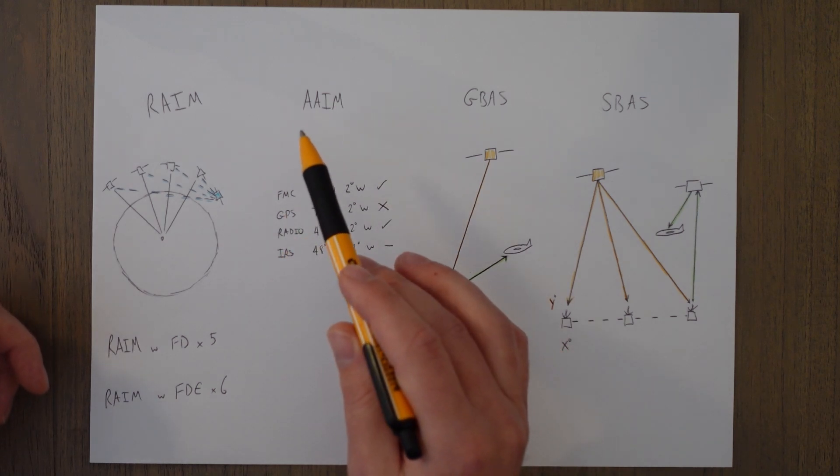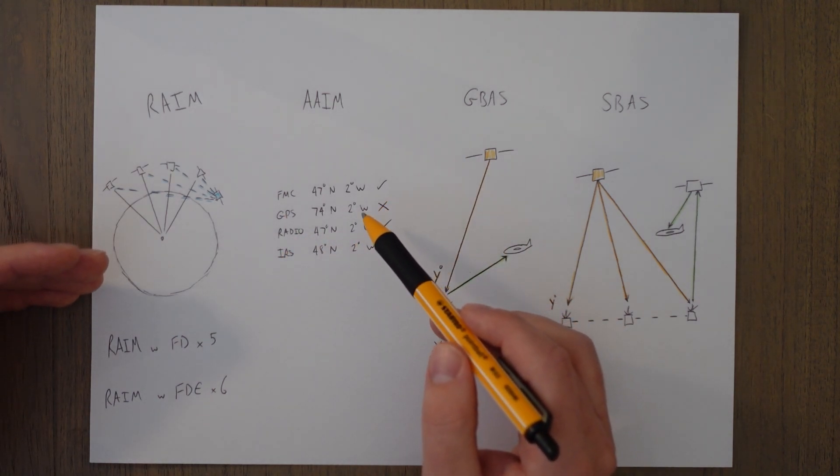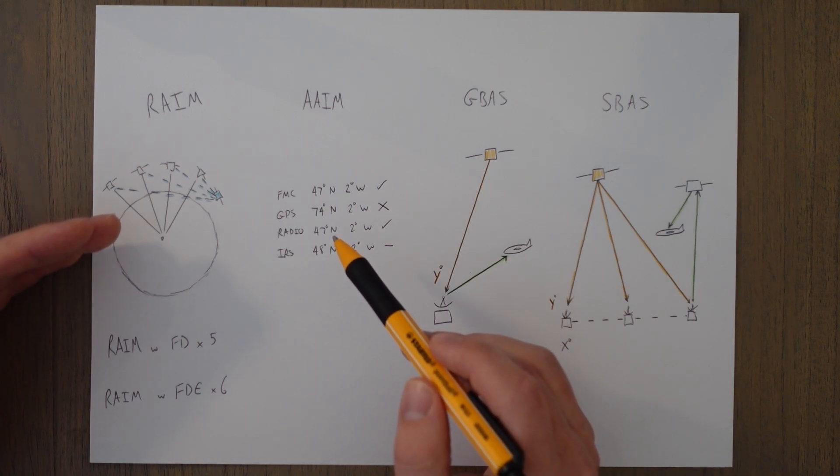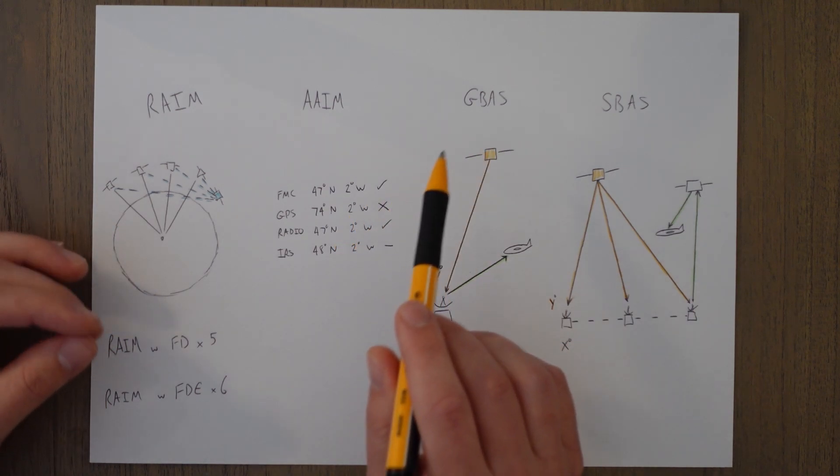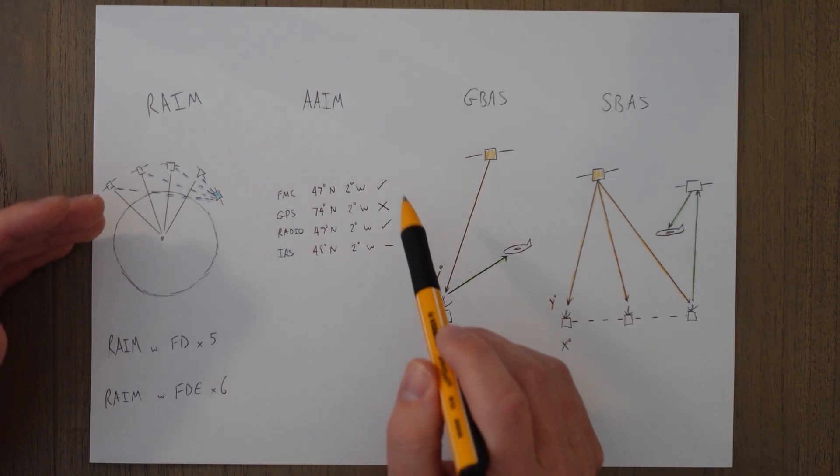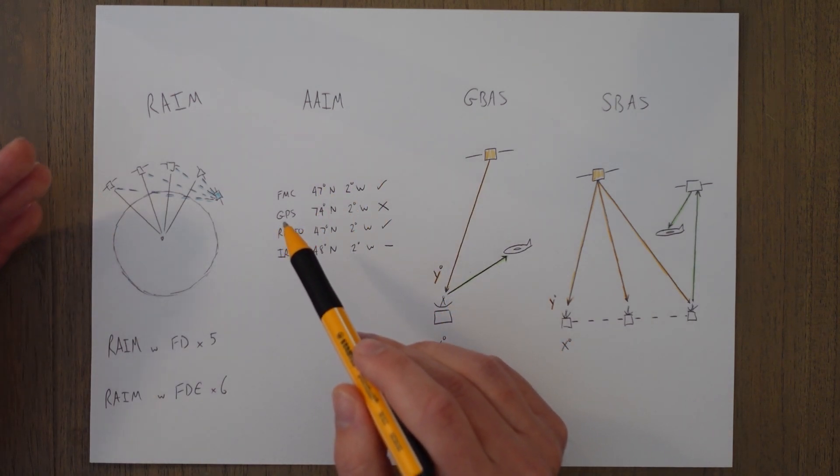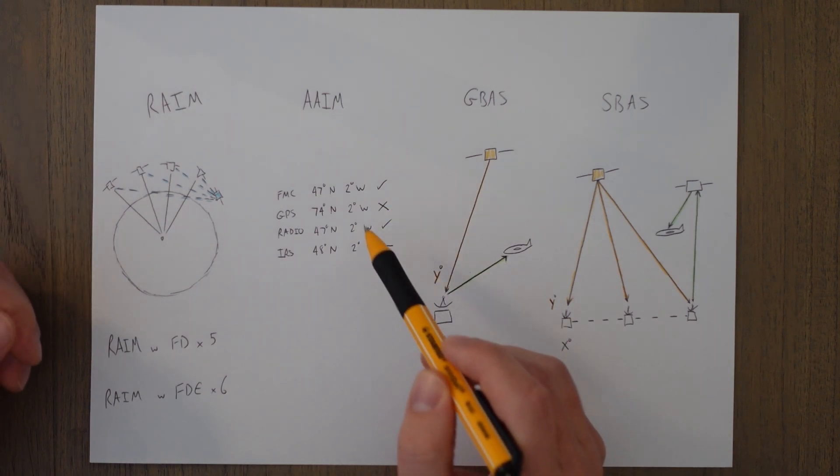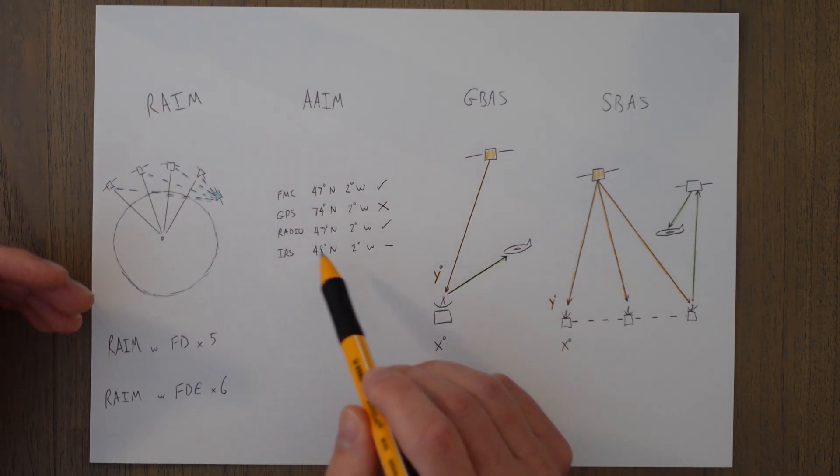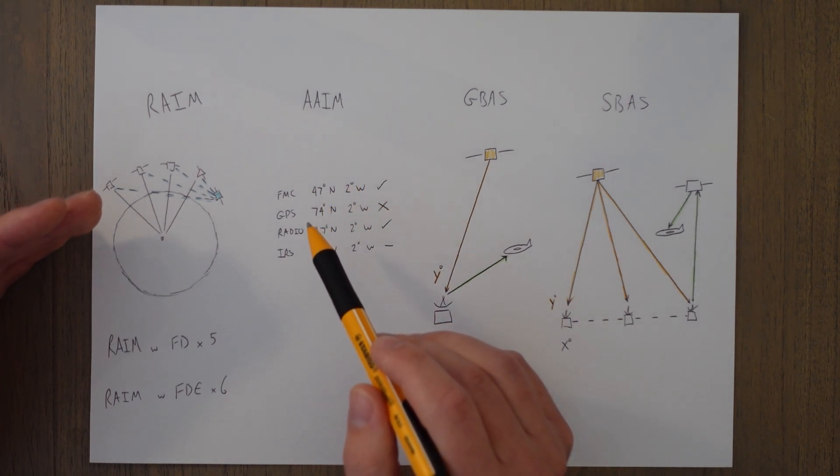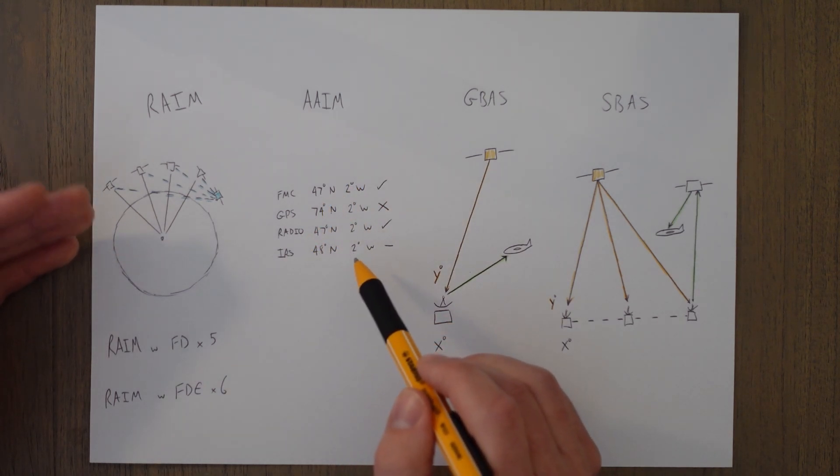In the aircraft we can have AAIM which basically is where the flight management computer compares the GPS position to conventional nav aid fixes and the IRS position of the aircraft and if any of these signals are dodgy such as if it's being spoofed or jammed then the GPS signal can be discounted and the position that the aircraft thinks it's in will be calculated using conventional nav aids or the IRS position.